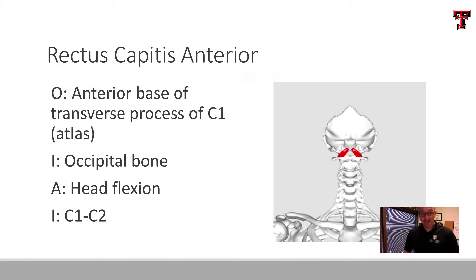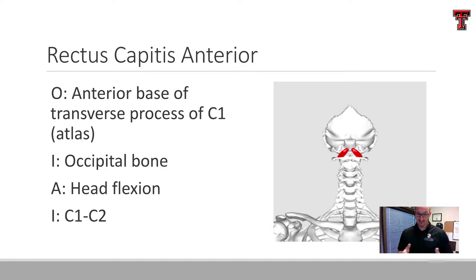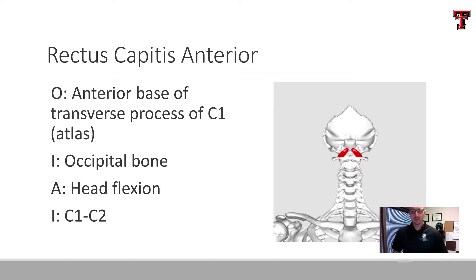We'll start with the rectus capitis anterior — a very small muscle, or a pair of muscles rather, that originate on the base of the transverse process of C1 right there on the atlas, and insert onto the occipital bone. In isolation, these lead to head flexion to that same side, and functioning together, they lead to combined flexion of the head. It's innervated by the nerve root at C1 and C2.